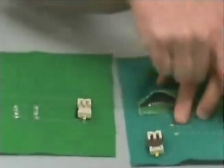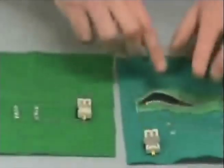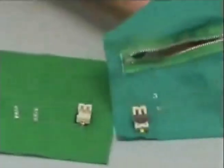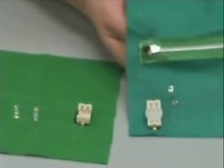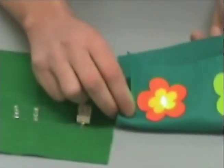For a circuit to work, there must be a constant flow. When the zip is closed, the LEDs are on.